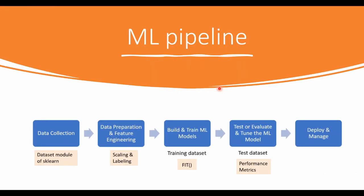This is the machine learning pipeline, which we saw during our last session. Here, we want to understand how sklearn can be used to perform various operations under different stages. If you look at the first stage — data collection — sklearn doesn't handle data collection, but it has a module called datasets, so we can load standard datasets from there. Under data preparation and feature engineering, we can make use of preprocessing. There is something called scaling — we can scale features using standard scaler and min-max scaler, which we will look at during our demo session.